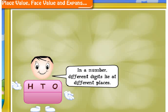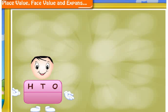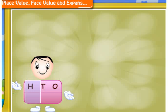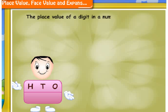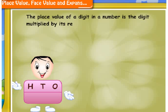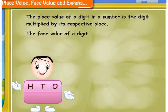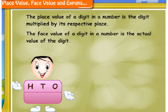In a number, different digits lie at different places — that is, at ones, tens, hundreds. The place value of a digit in a number is the digit multiplied by its respective place. Whereas, the face value of a digit in a number is the actual value of the digit.